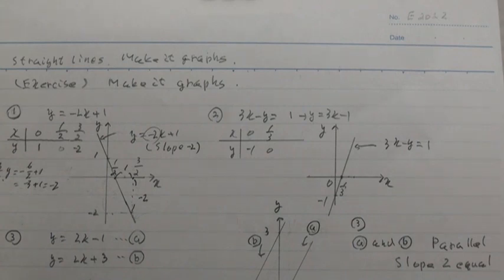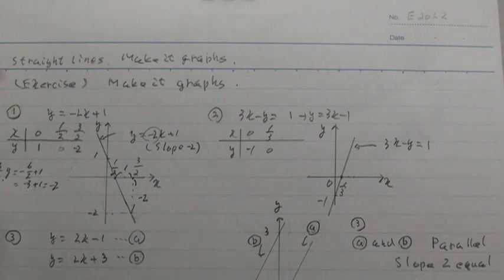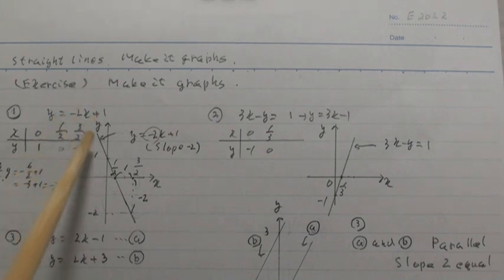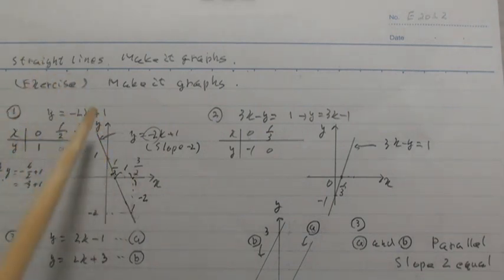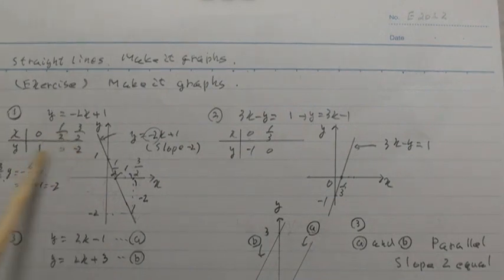Circle 1, equation: y equal minus 2x plus 1. And make a table. x equal 0, y equal 1. x equal 1 over 2, y equal 0. x equal 3 over 2, then minus 6 over 2 plus 1, equals minus 4 over 2, equal minus 2.